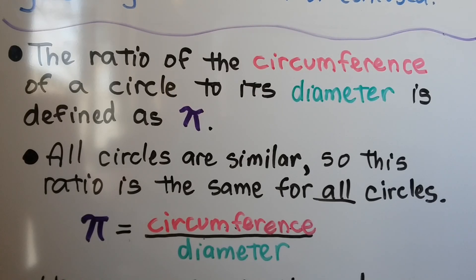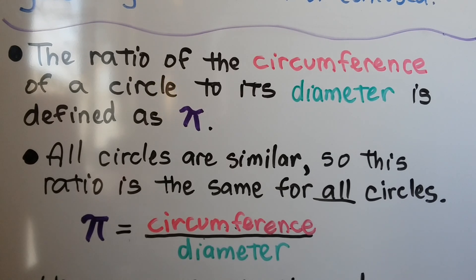The ratio of the circumference of a circle to its diameter is defined as pi, and all circles are similar, so this ratio is the same for all circles. Pi is equal to the quotient of the circumference and the diameter.